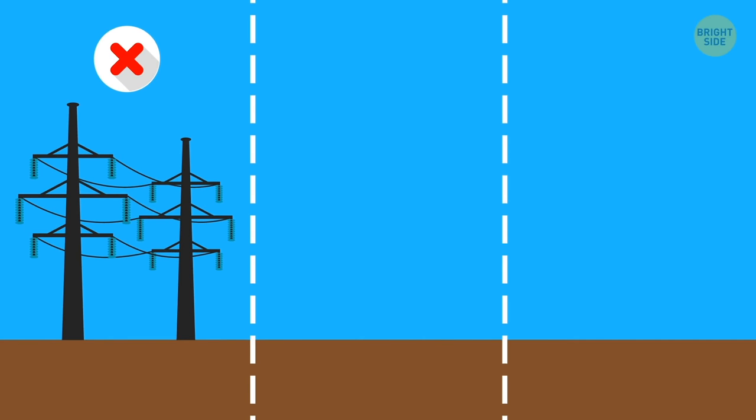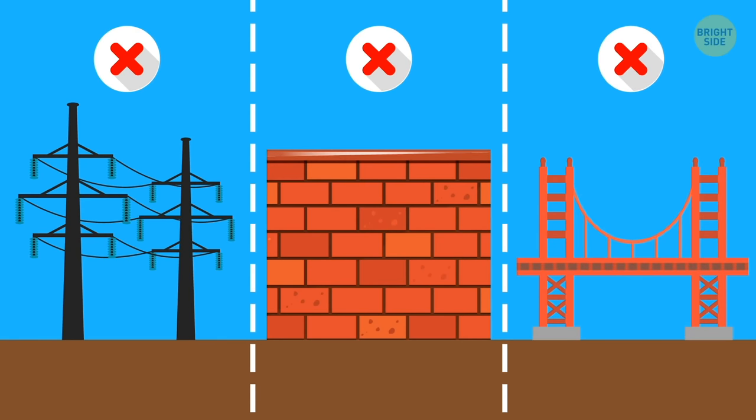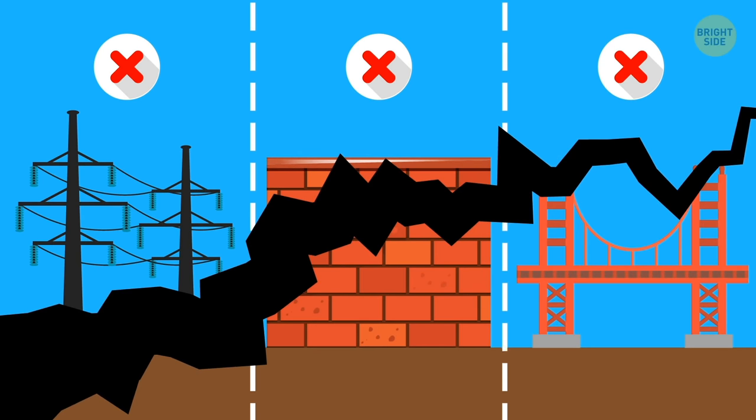On top of that, stay away from power lines, walls, bridges, and whatnot. Even if these constructions look sturdy enough, they can collapse during the aftershock.